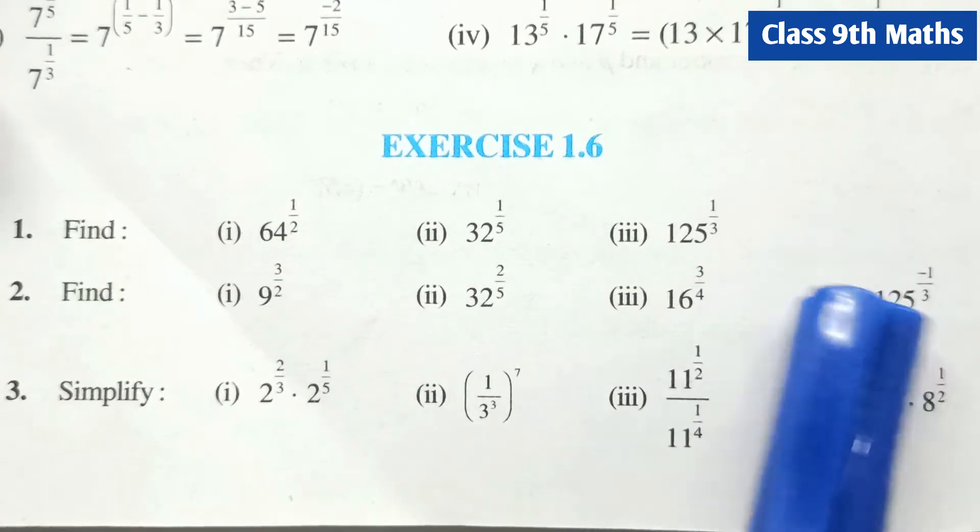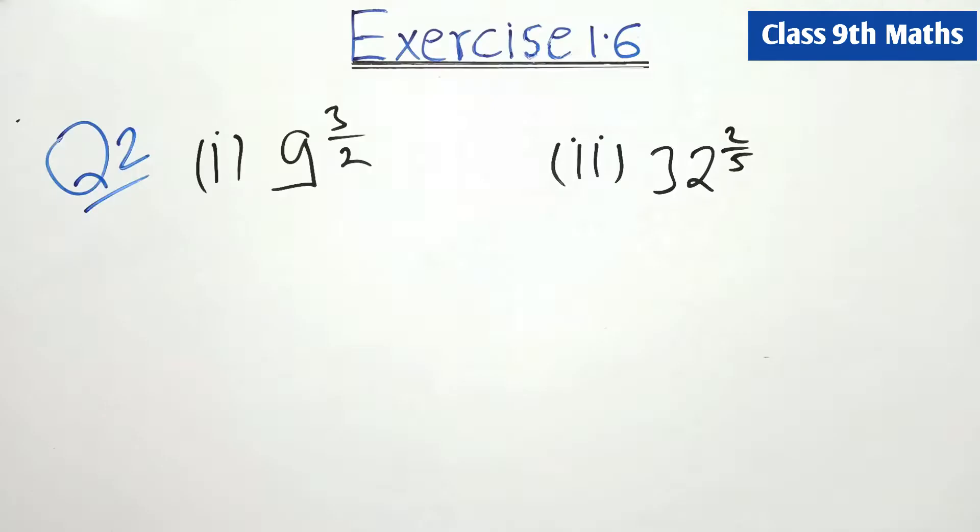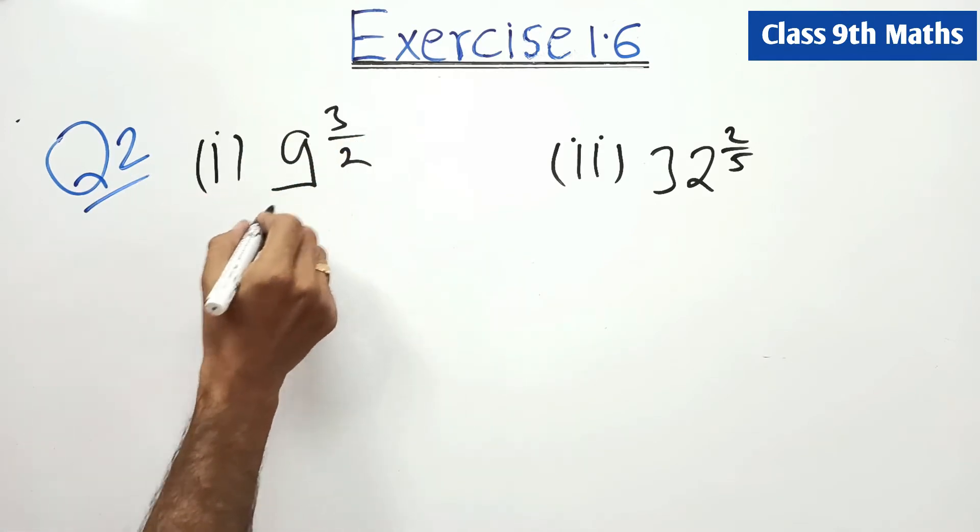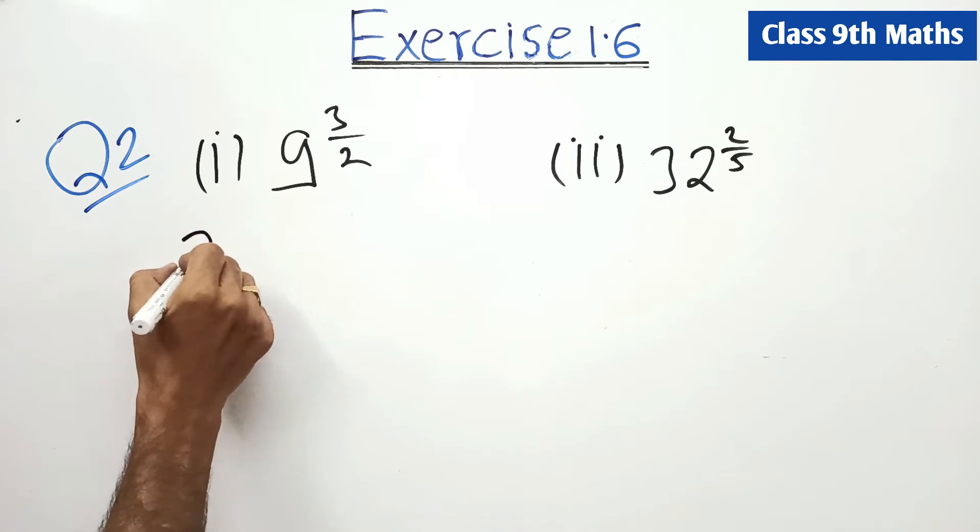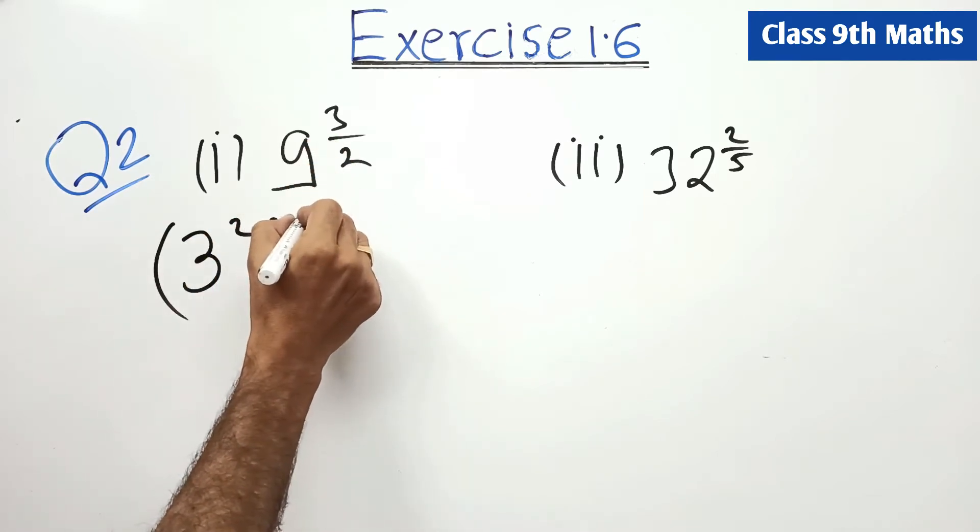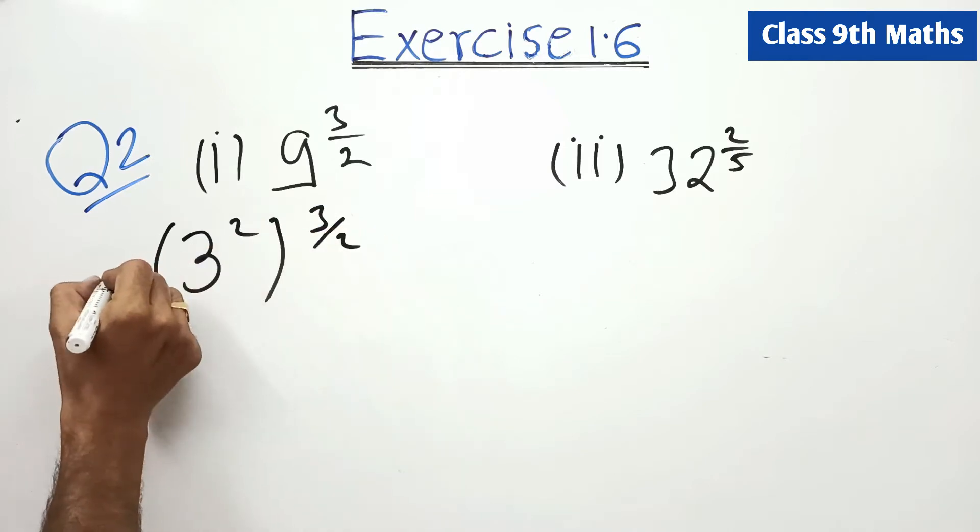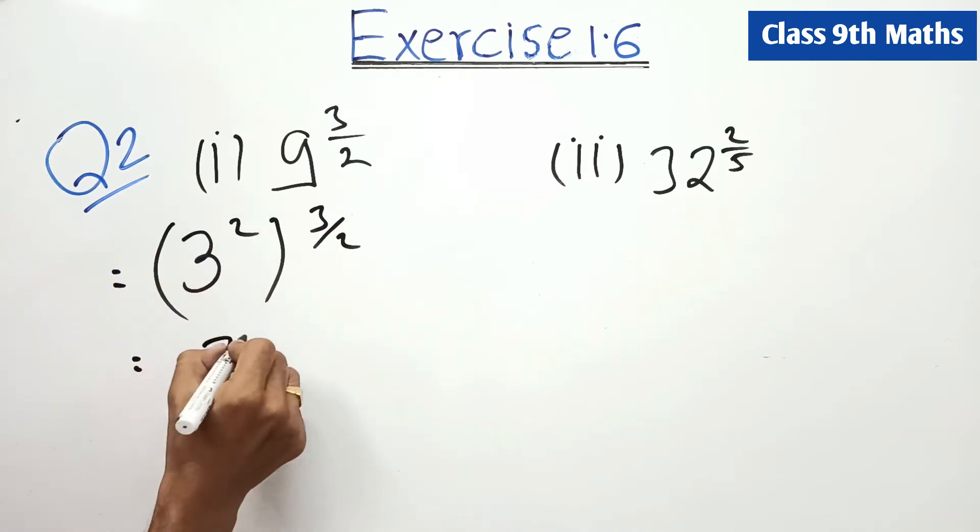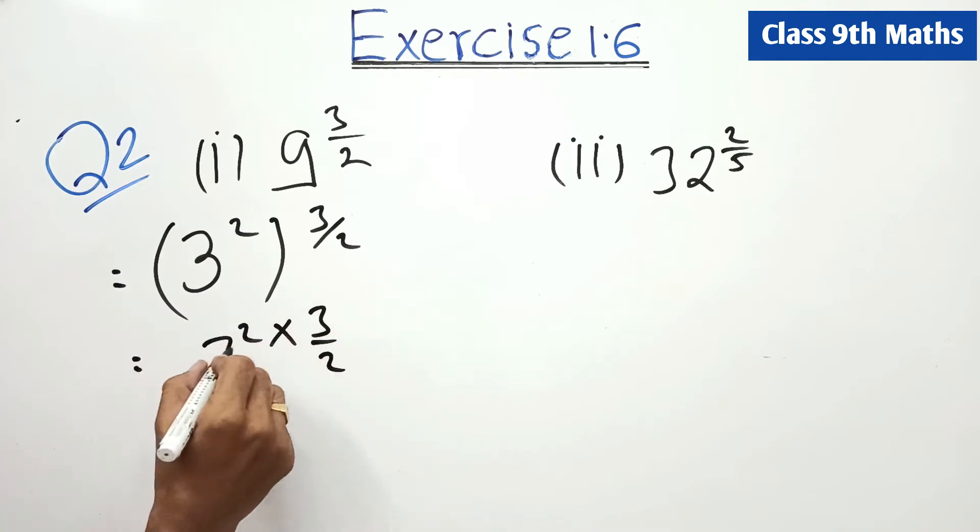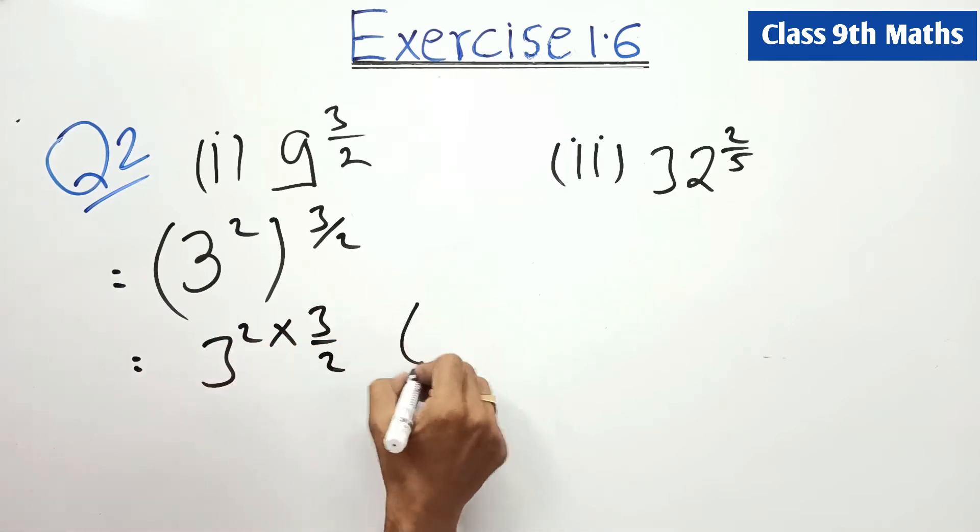Using the law of exponents to solve the equation. Now students, let's do the 2nd question exercise 1.6. 9 is 3 squared, raised to the power 3/2. So, 3 squared into 3 upon 2. How can we mention it in the exam?